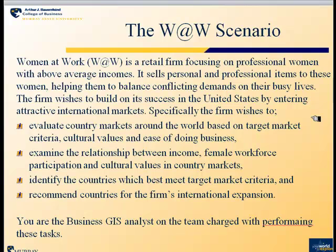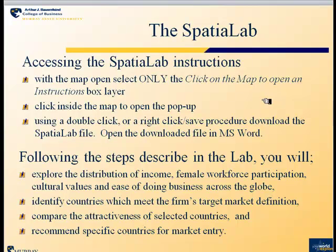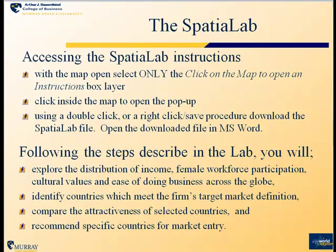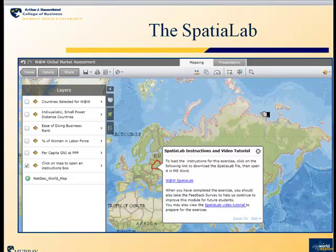The goal is to identify countries which best meet the target market criteria and recommend them for the firm's international expansion. You are the business GIS analyst on the team. To access the Spatial Lab, you will open the associated map, click on the instructions box layer, then click inside the map to open a pop-up with instructions, and use a double-click or right-click and save procedure to download the lab and open it in Microsoft Word. Instructions for downloading the file and viewing this video tutorial are included in that instruction box.